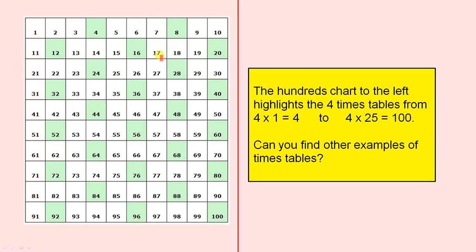Now here's another hundreds chart. You can see from 1 to 100. Now I've got some numbers highlighted in green. Now what does that mean? Or what does that tell us? The hundreds chart to the left highlights the 4 times tables from 4 times 1 equals 4 up to 4 times 25 equals 100. Can you find other examples of times tables?